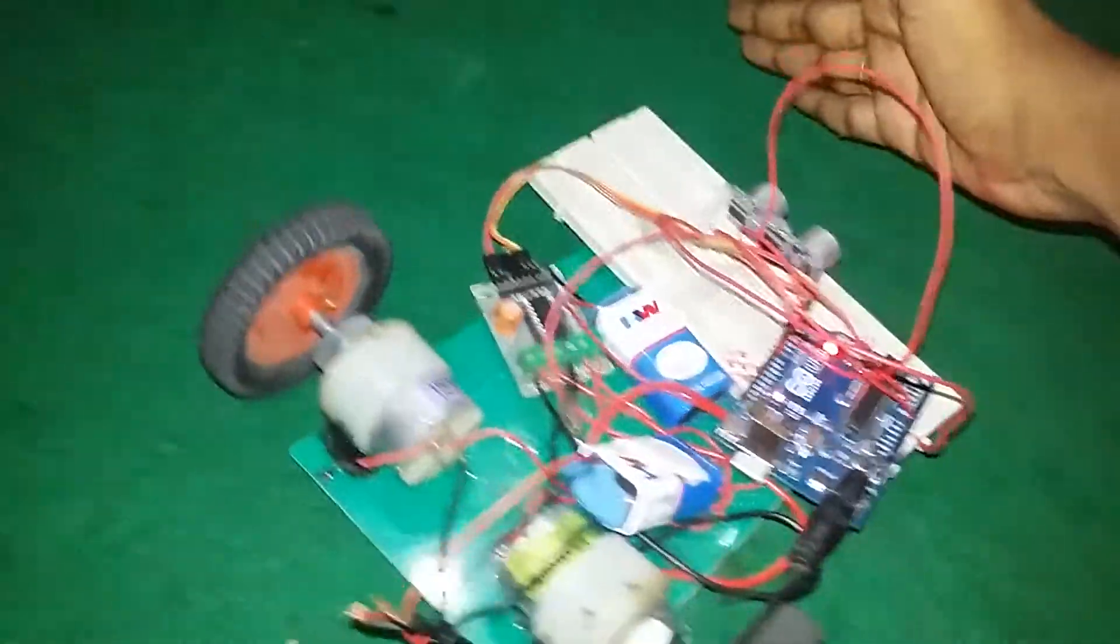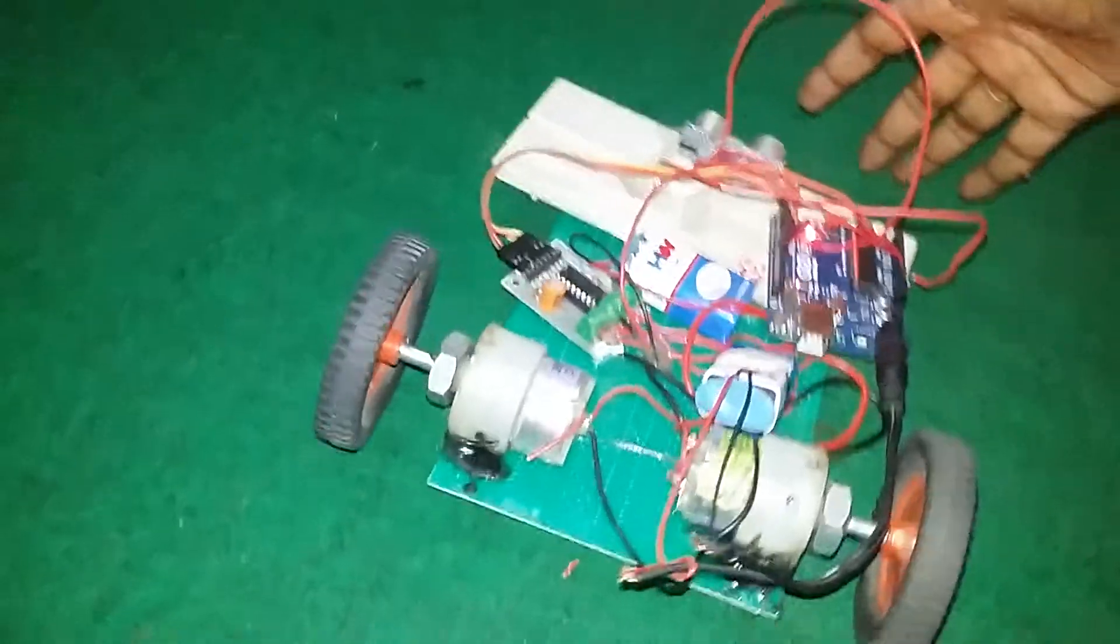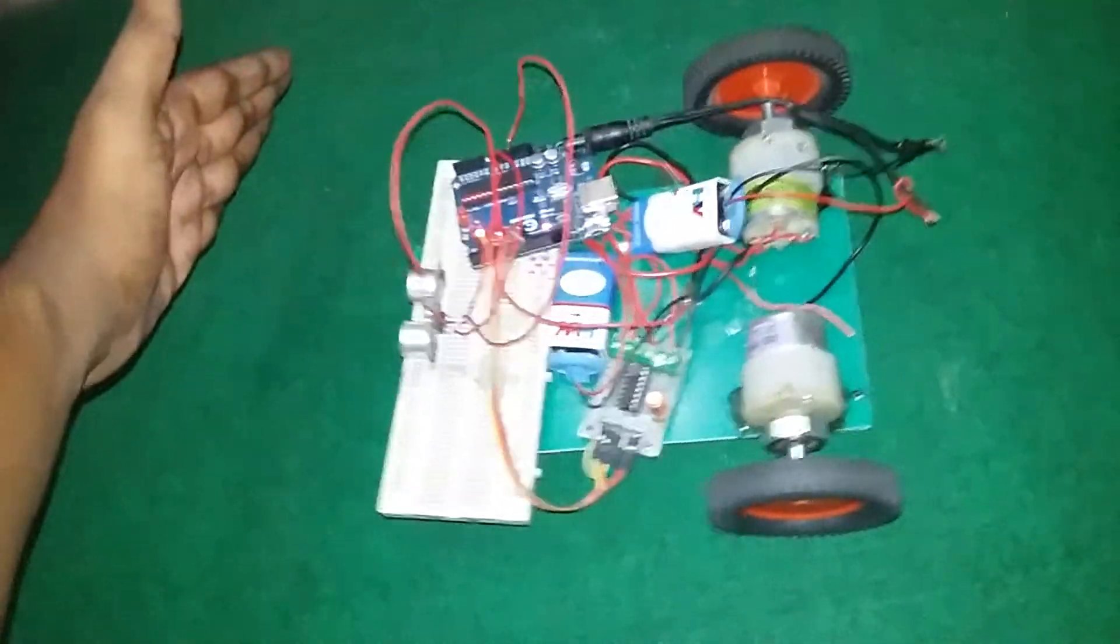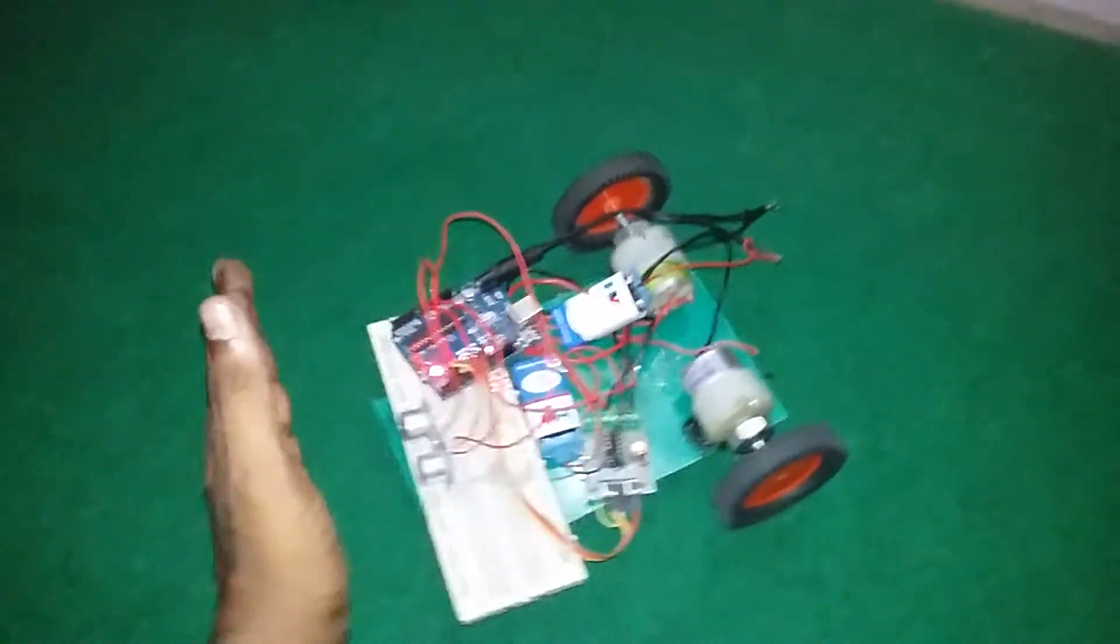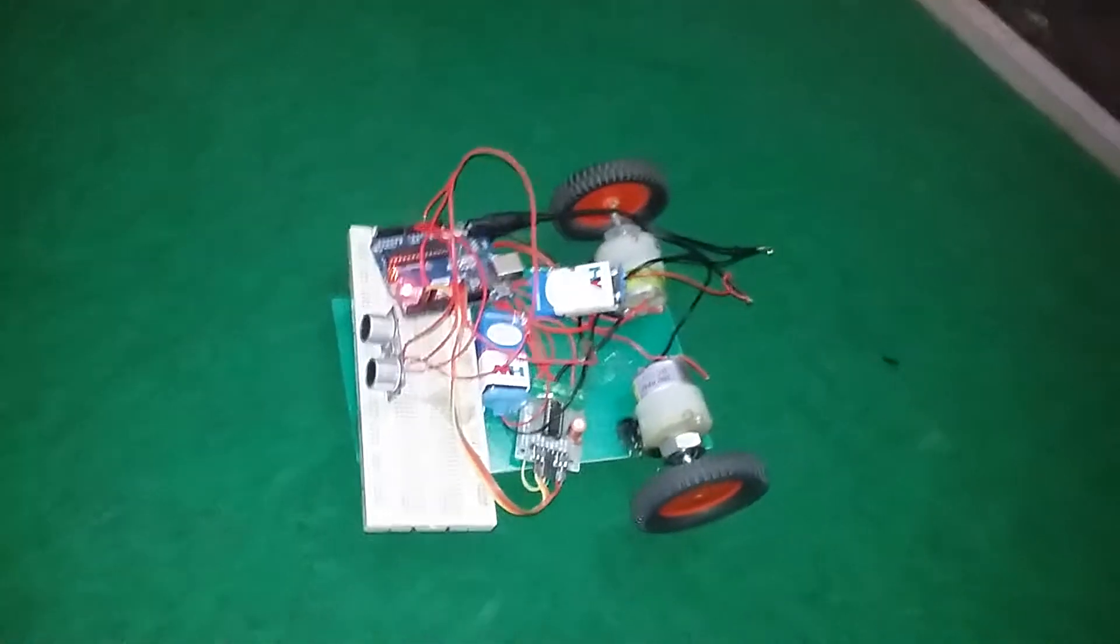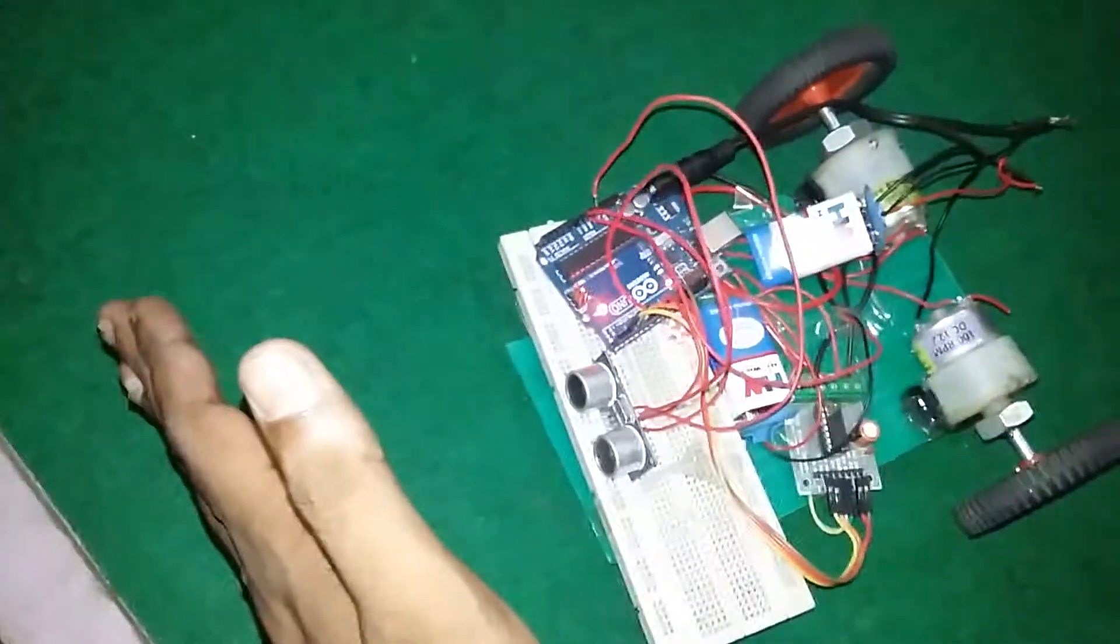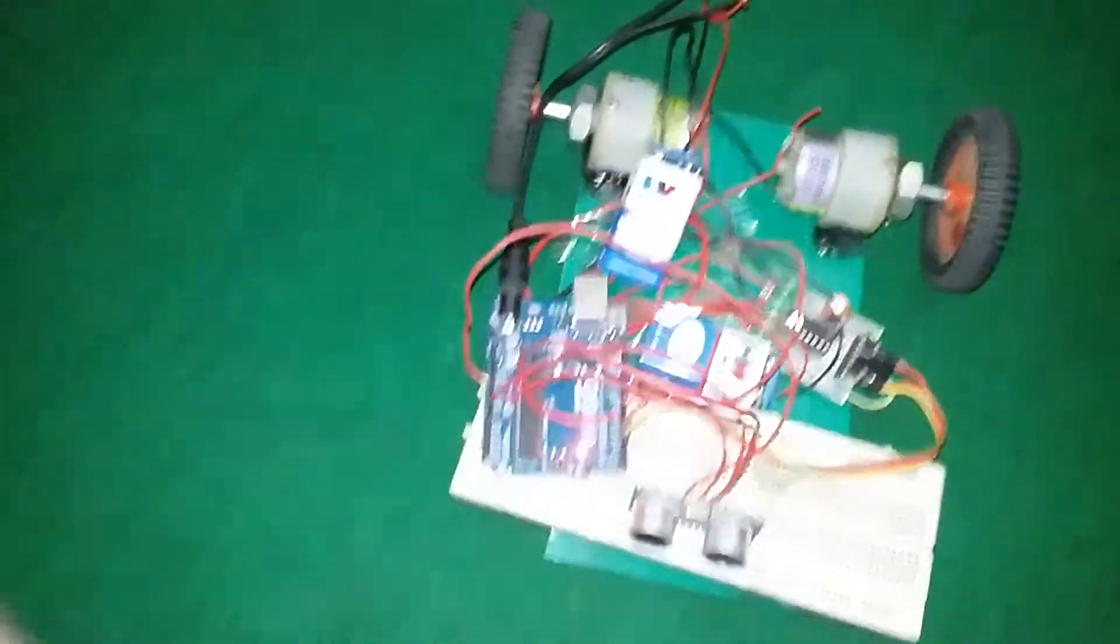Here, the obstacle is detected by the ultrasonic sensor. I have used my hand as an obstacle. When I bring my hand in the range of 20 centimeters, the robot moves in another direction.